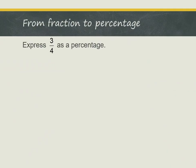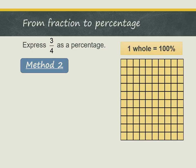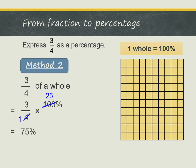Now let's look at method 2 to express the fraction 3 quarters as a percentage. Recall that 1 whole is equal to 100%. So if we have 3 quarters of a whole, it is equal to 3 quarters times 100%. We can simplify this to get the answer 75%.